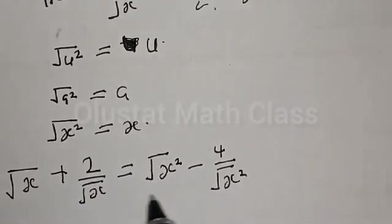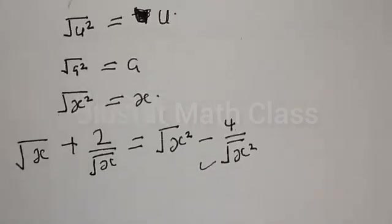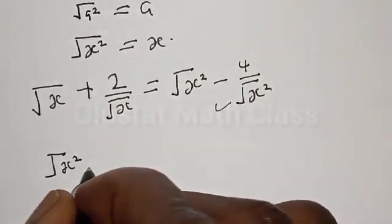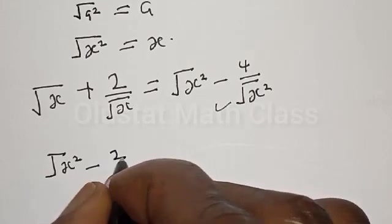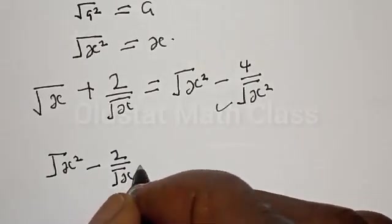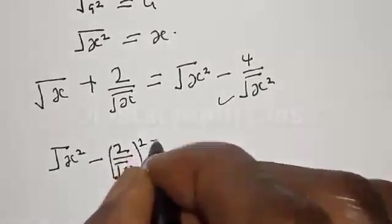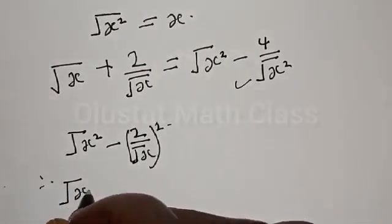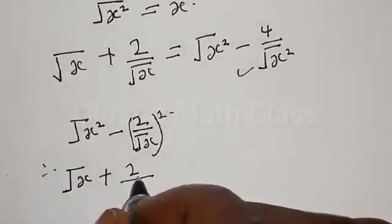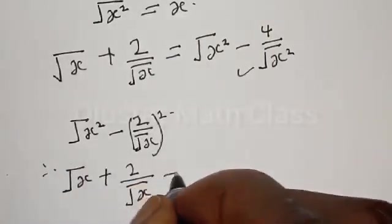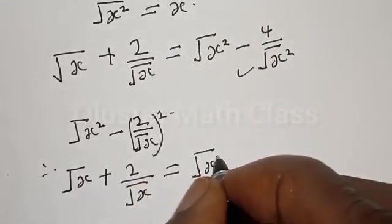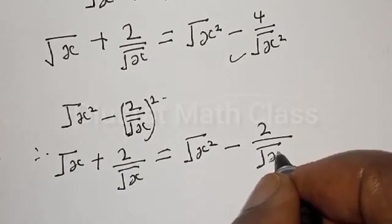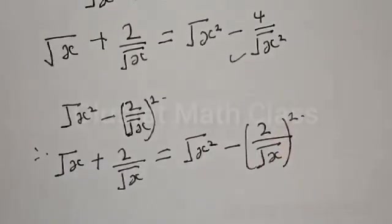Let's try to factorize the equation on the right hand side. We have square root of a squared minus 2 divided by square root of s squared. Therefore, we have square root of s plus 2 divided by square root of x equal to square root of s squared minus 2 divided by square root of s squared.